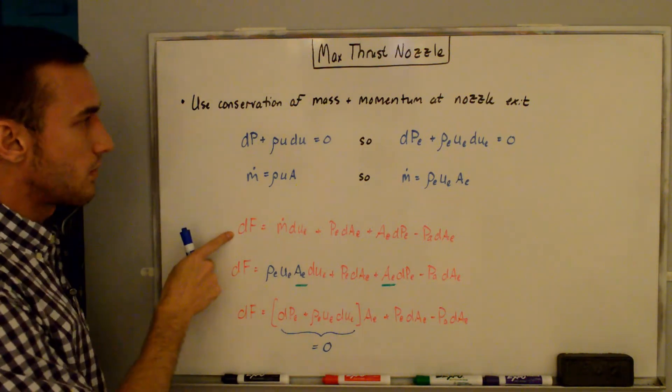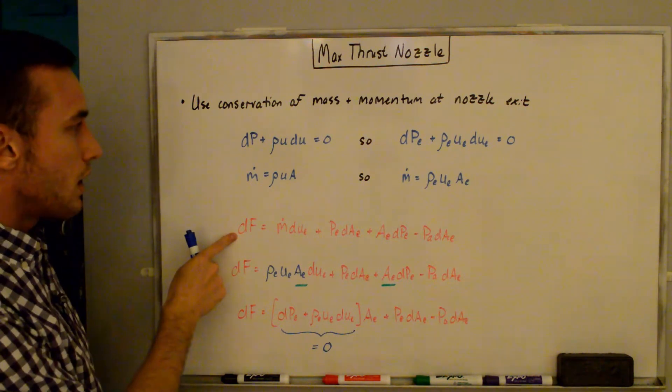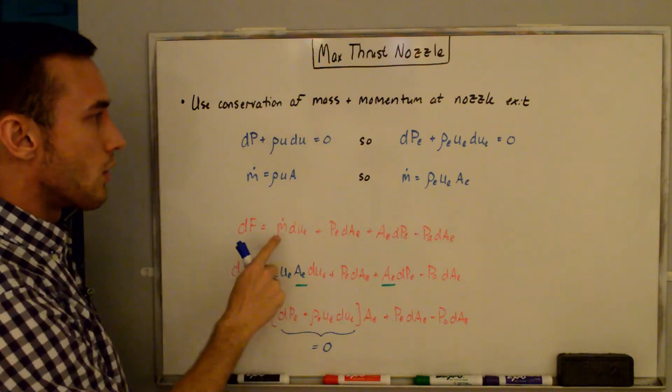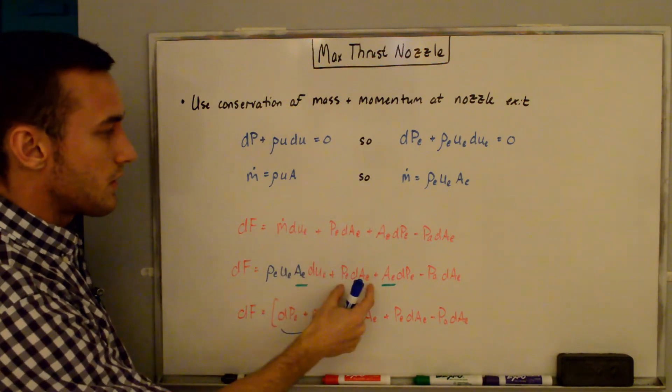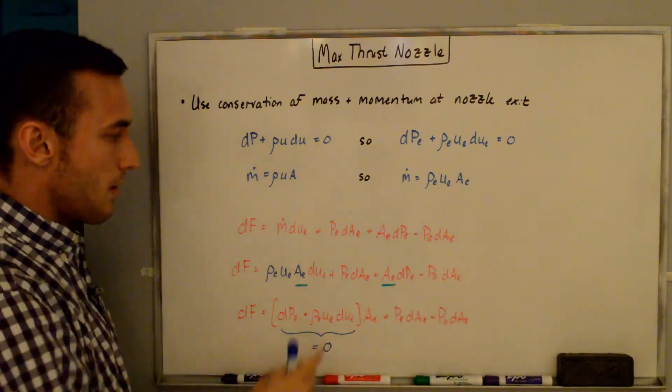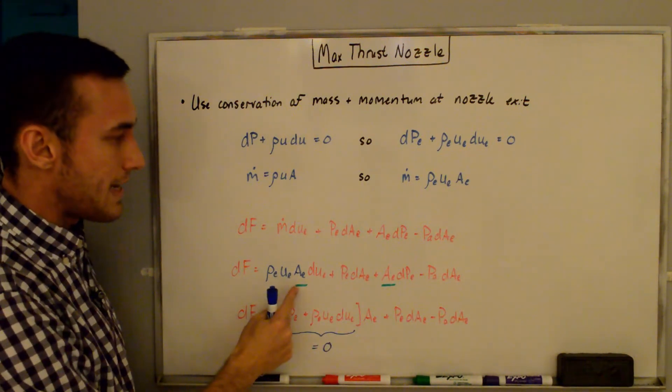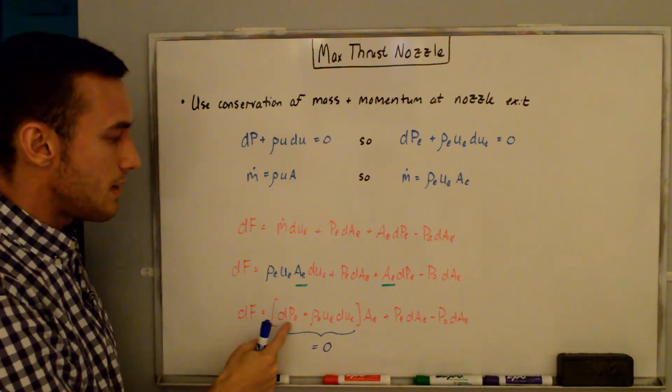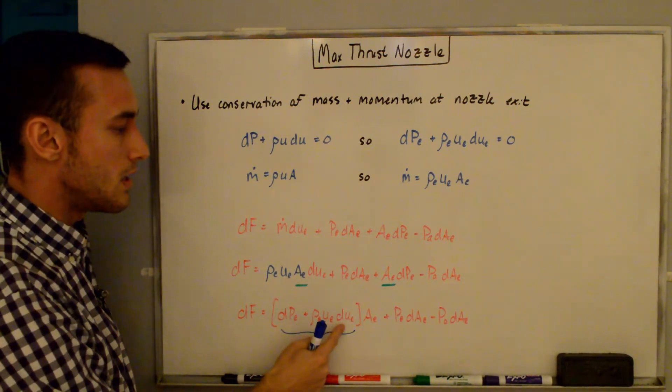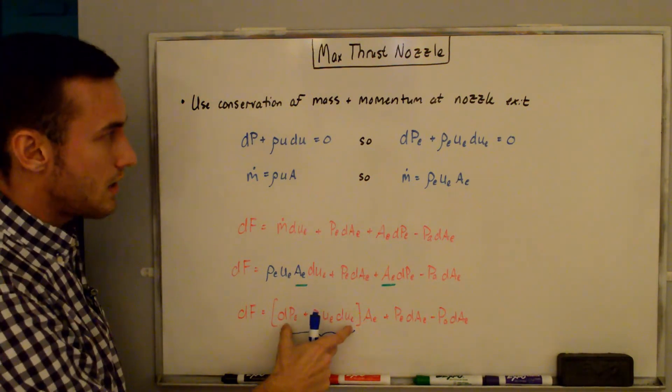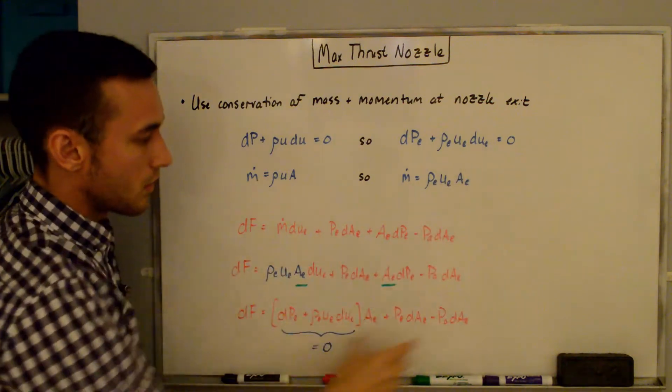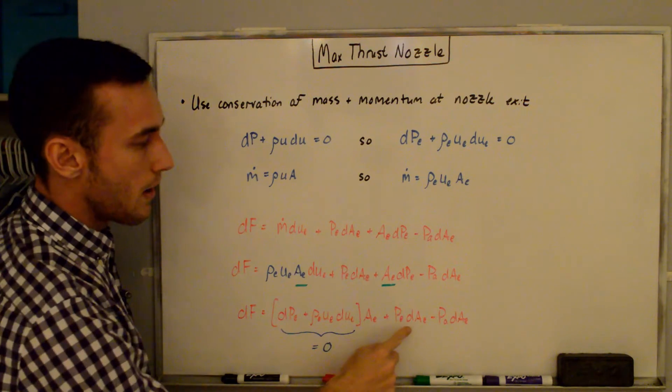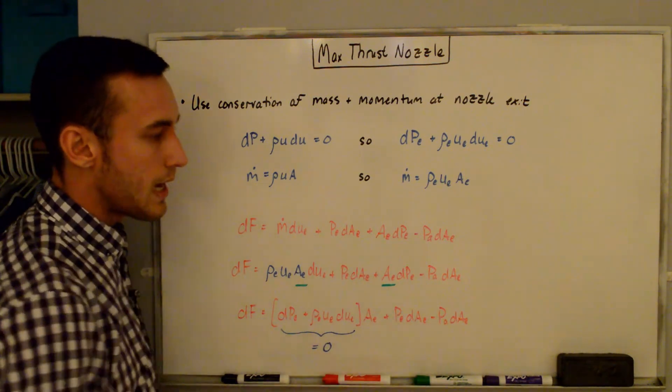So this is the expression from the previous whiteboard for the change in the thrust. And so if we plug in for ṁ, we can see the ṁ here, we plug that in, we actually plug this one in, the ρEuEAE, we get this term here. This stays the same, this stays the same, and this stays the same. Now you can see that these two terms both have the common term AE, so we can factor out the AE and combine this and this, and so we get (dpE + ρEuEduE) times AE. And in this expression, you can see that this right here is this expression up here, which is equal to zero. So we can set this whole thing equal to zero, that means this whole term cancels out, and we're left with dF = pEdAE - pAdAE.